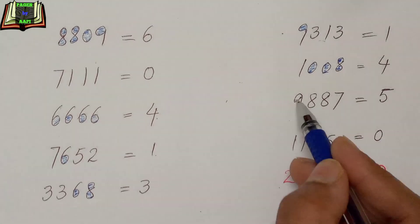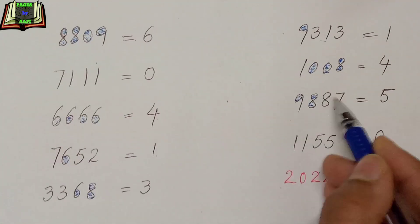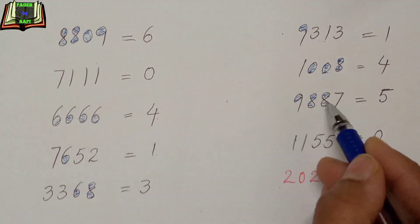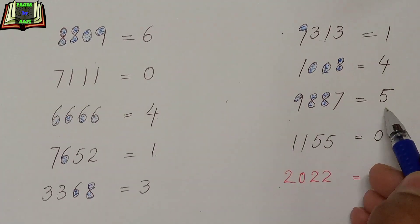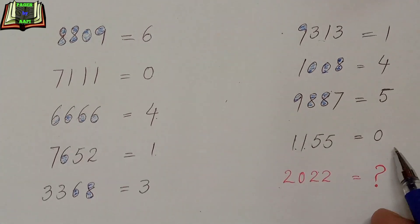In the next number 9887, there are totally 5 circles here, that is why this number is equal to 5. And the last number 1155 is equal to 0 because there is no hole in it.